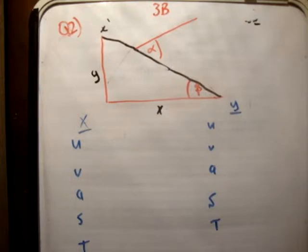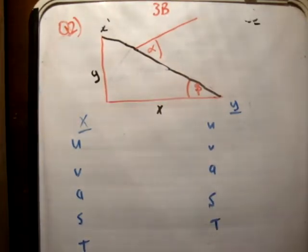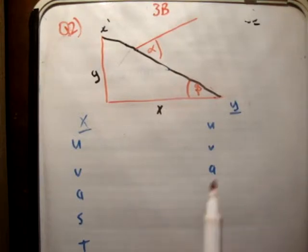a particle is projected with initial speed u down a hill. The line of projection makes an angle alpha with the hill, and the hill itself is inclined at an angle beta to the horizontal. We're asked to find the velocities and the distances. We have a sketch of the motion on page 77, and I've drawn that in front of you.